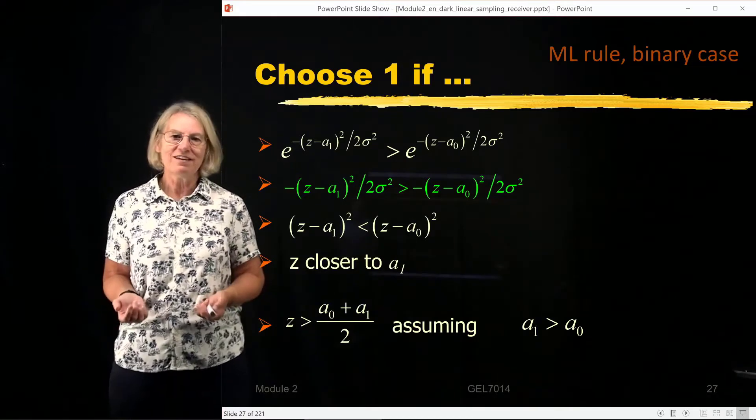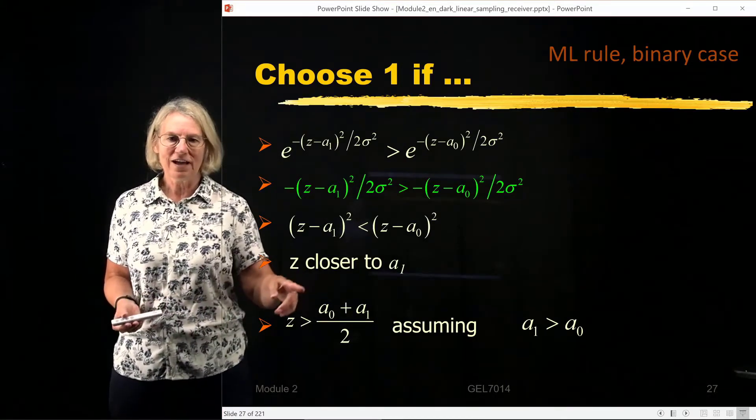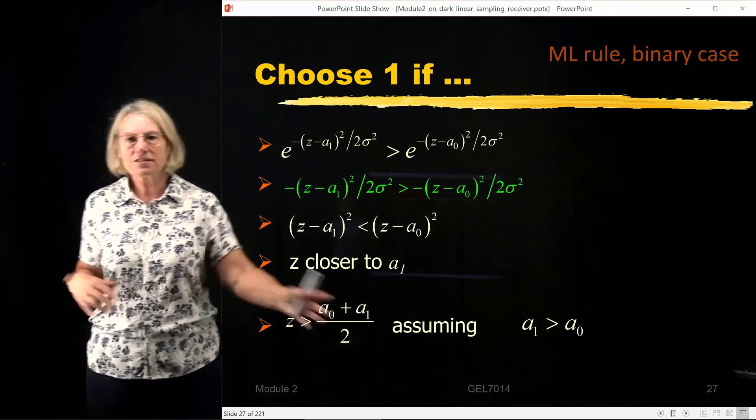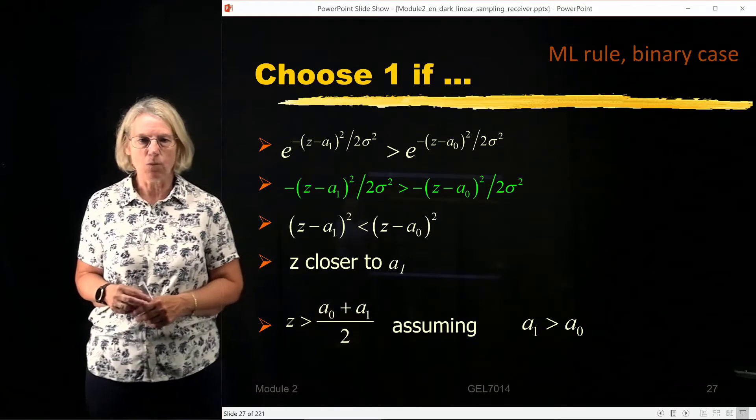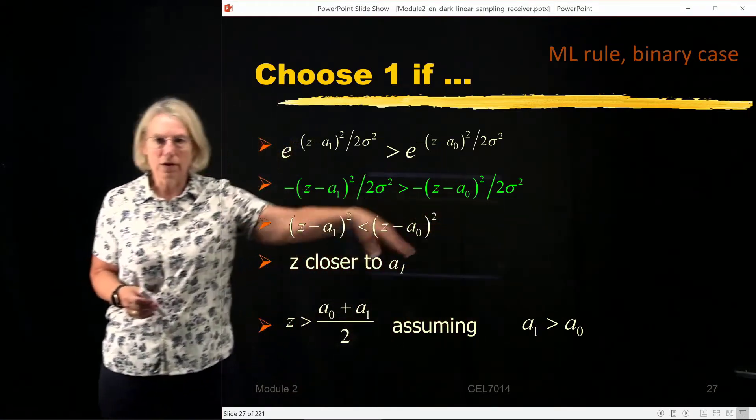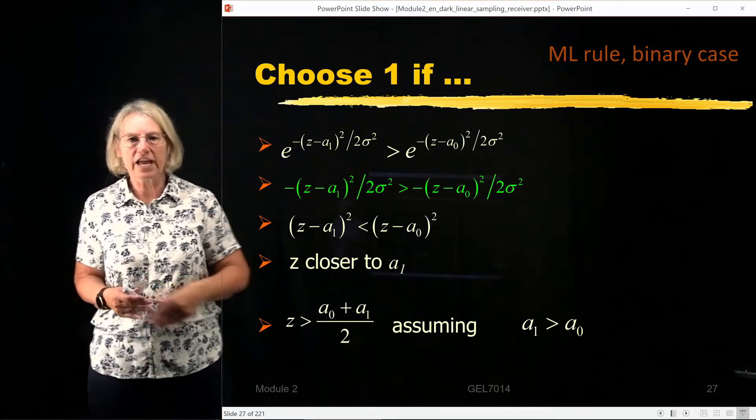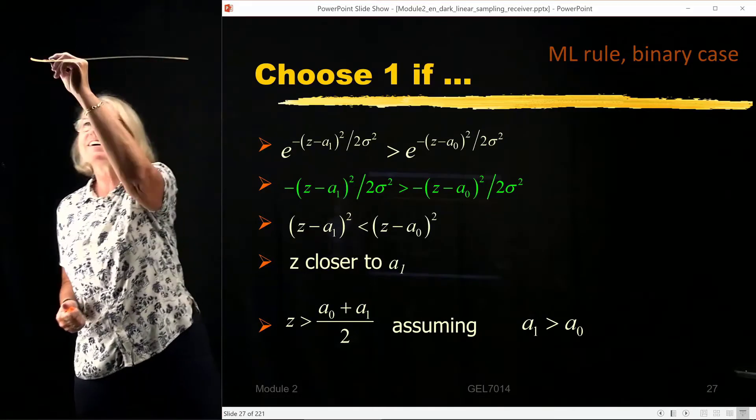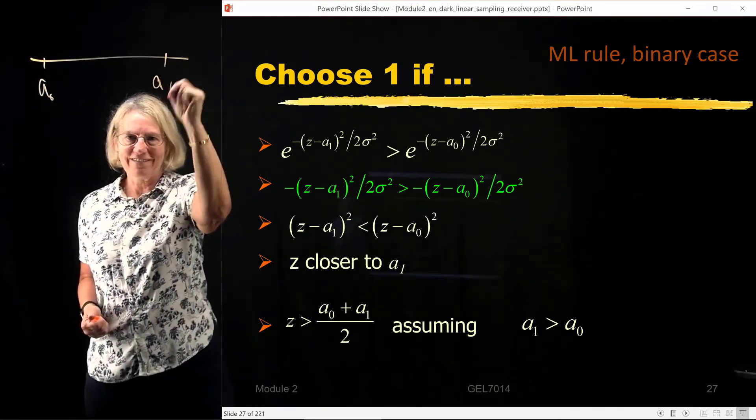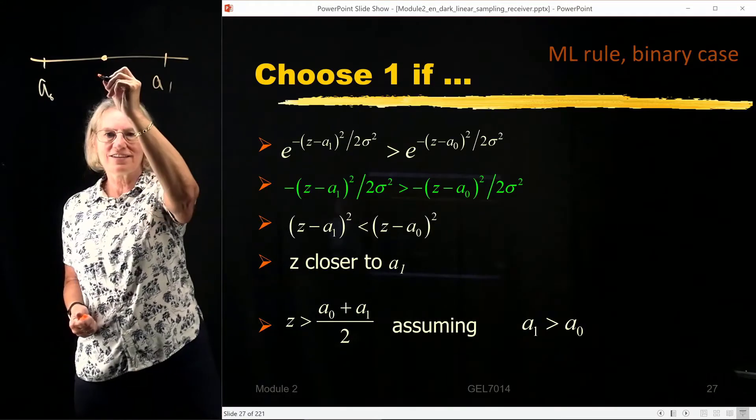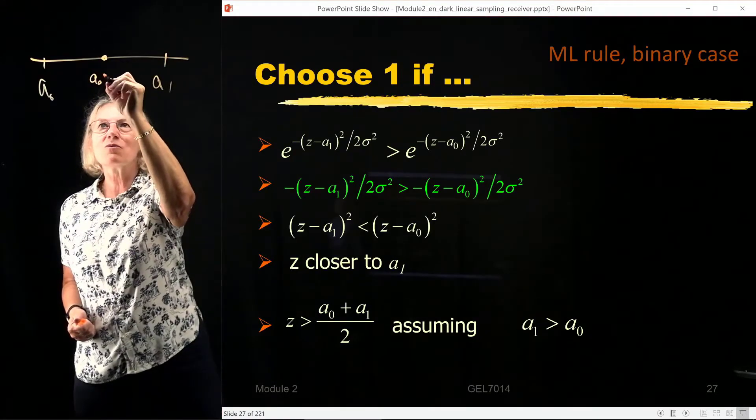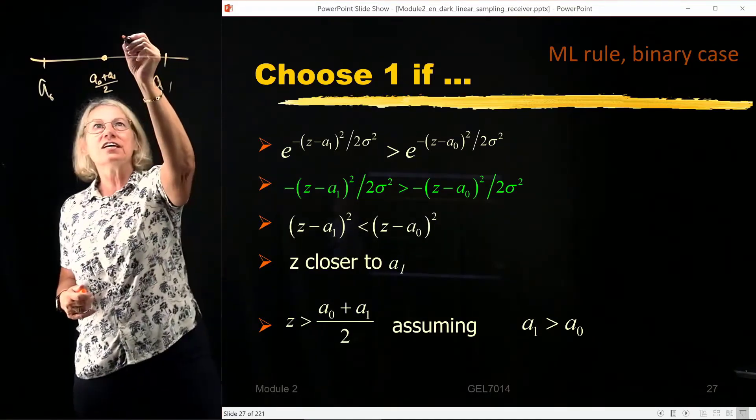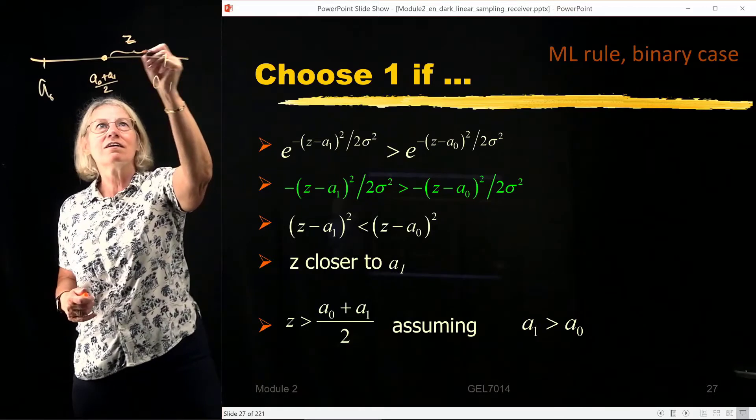So the equivalent would be that z should be greater than the sum of the average, the midpoint. This would be the midpoint of a₀ and a₁. And we're assuming that a₁ is the greater one. It's like arbitrary but we make that assumption. In which case if I want to know if it's, okay, let's just make this simple. Here's a₀, here's a₁. The midpoint is here at (a₀ + a₁) divided by 2.